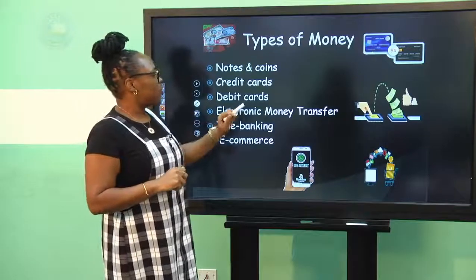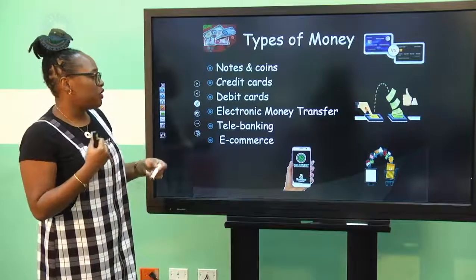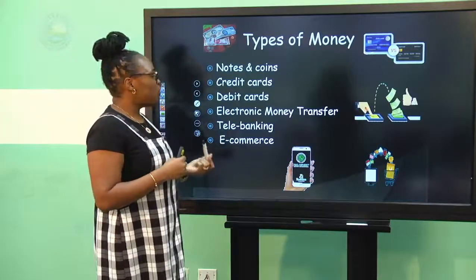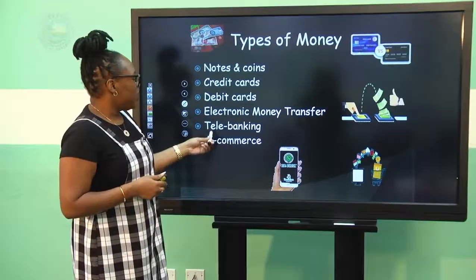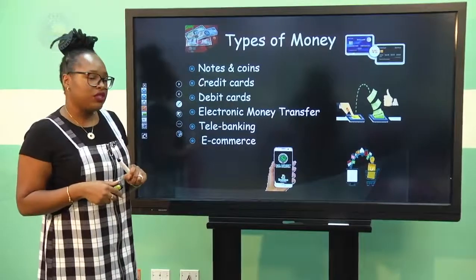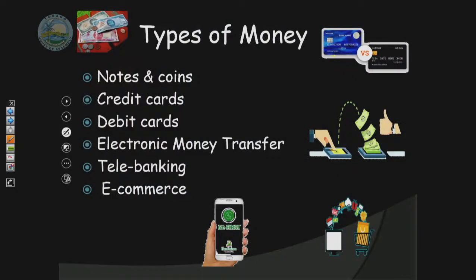Then we have electronic money transfer, where money is transferred from your account to somebody else's, or sent via Western Union or MoneyGram to someone in another country. We also have telebanking, which is using your phone to do a variety of transactions — you can call your bank or use the app. Lastly, we have e-commerce, which is the buying and selling of goods and services online. Many of you may relate to ordering shoes or a book bag online, delivered to a skybox, allowing you to obtain goods from outside of Trinidad and Tobago.